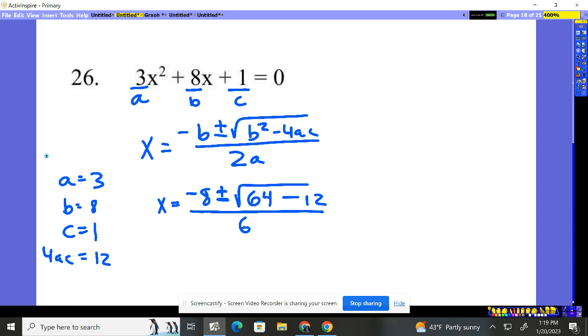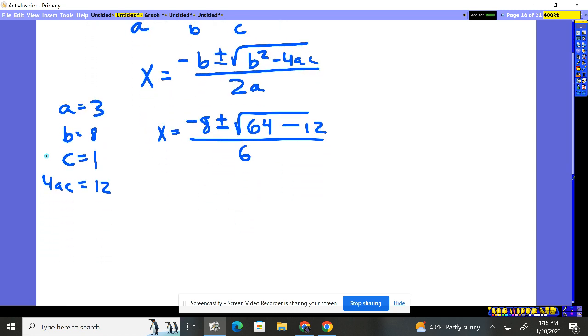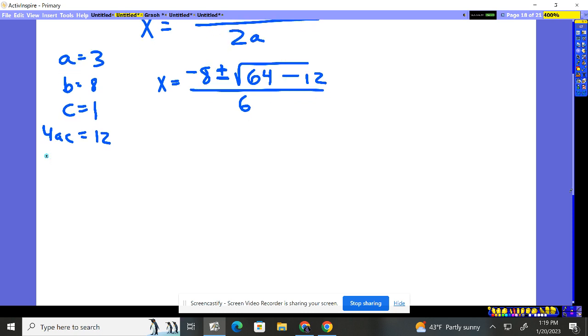So, what do we have? Let's scroll the board down a little bit. We have x is equal to negative 8, plus or minus the square root, 64 minus 12. Looks like 52. It's not a perfect square. Okay, so we're just going to have to use a calculator.